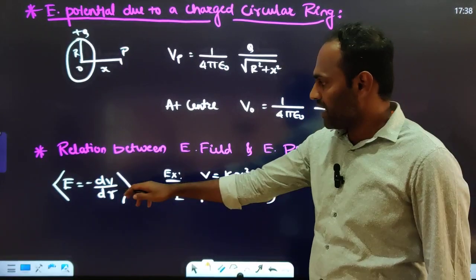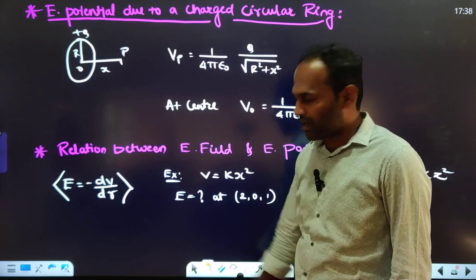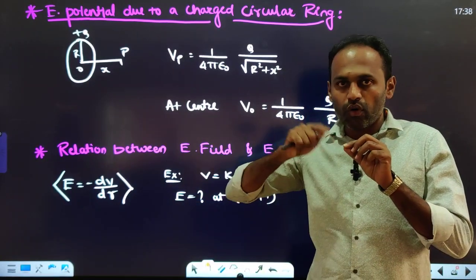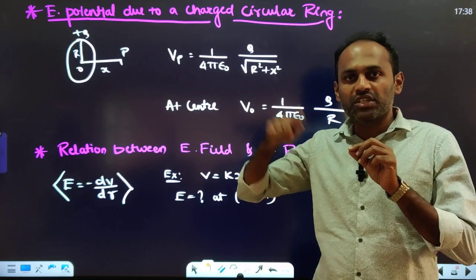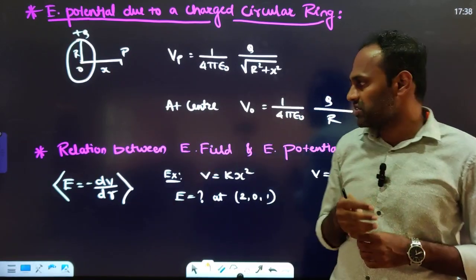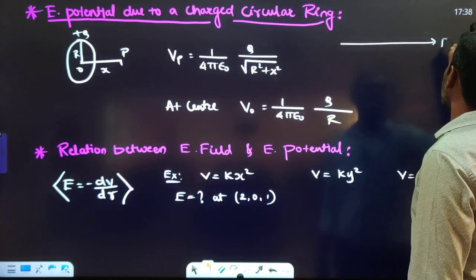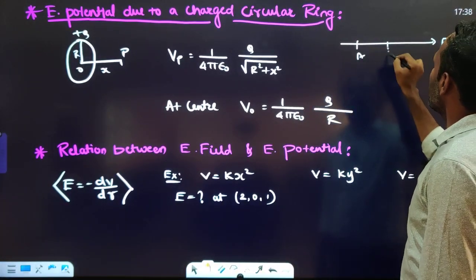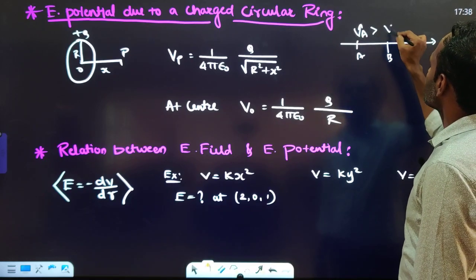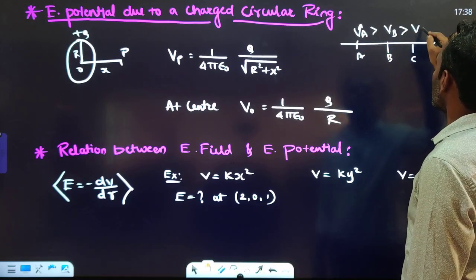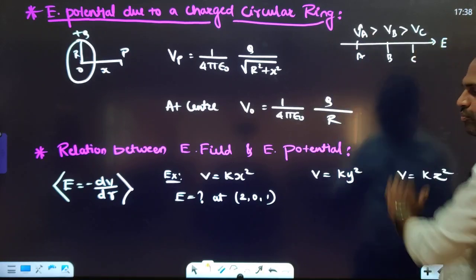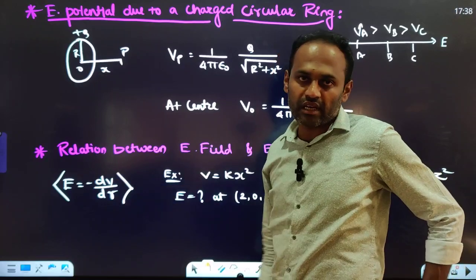The relation between electric field and electric potential is E = −dV/dr. In the direction of the electric field, potential goes on reducing. For example, if A, B, C are points along the electric field direction, potential at A is greater than at B, which is greater than at C. The negative sign signifies that potential reduces in the direction of the electric field.